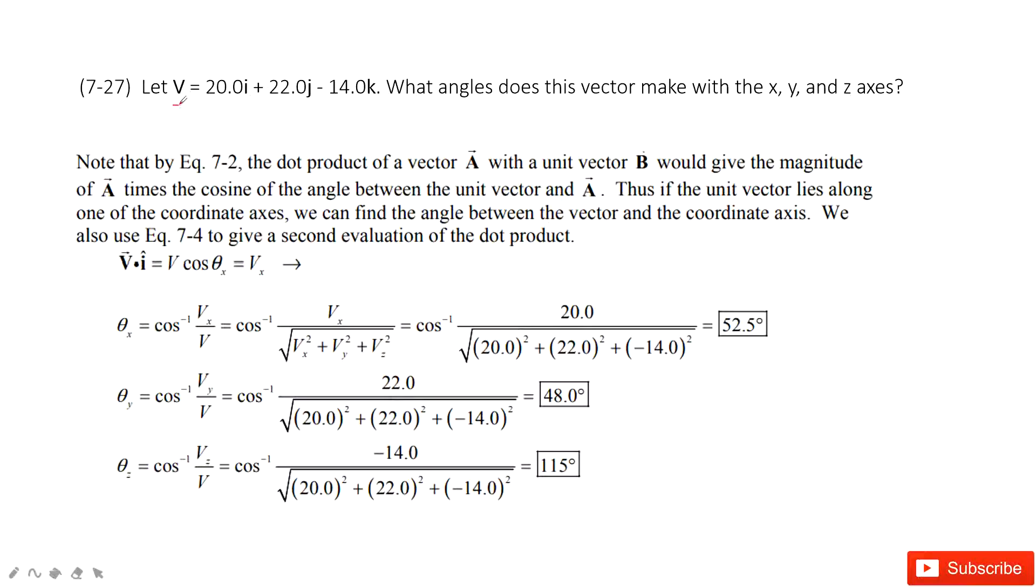As you can see, we have a vector, and we know the x-component, y-component, and z-component. We need to find the angle that this vector makes with the x, y, and z axes.